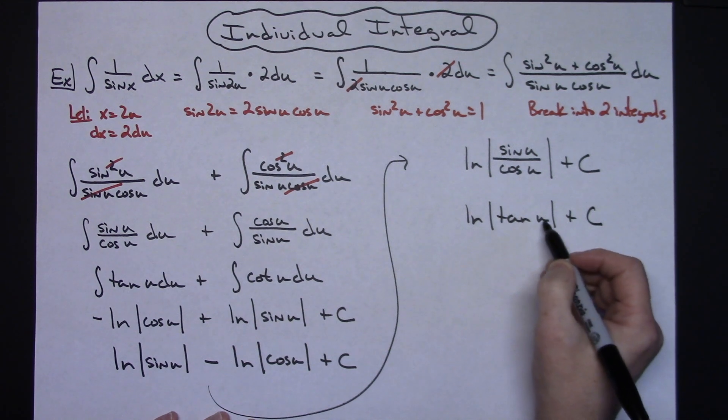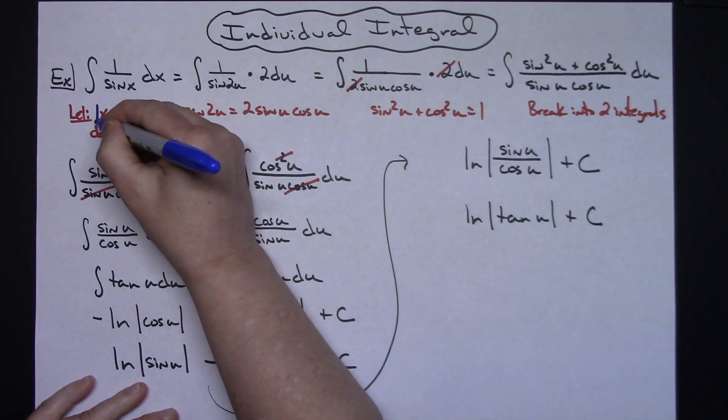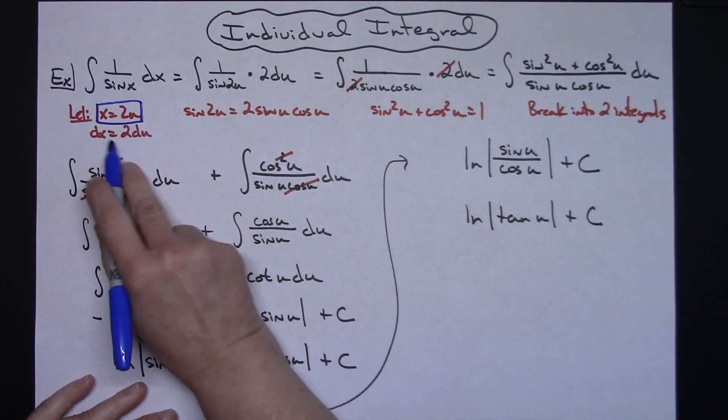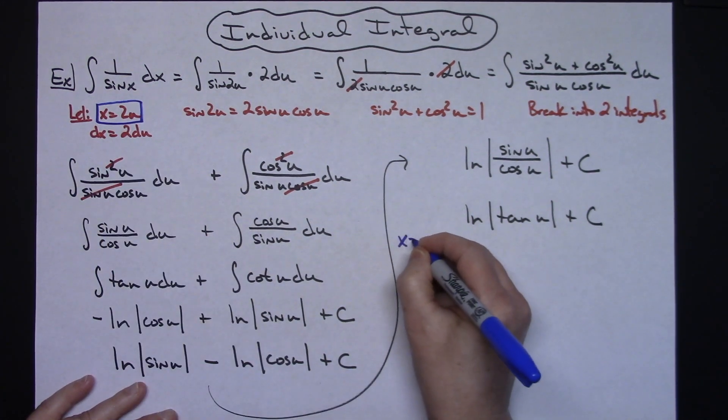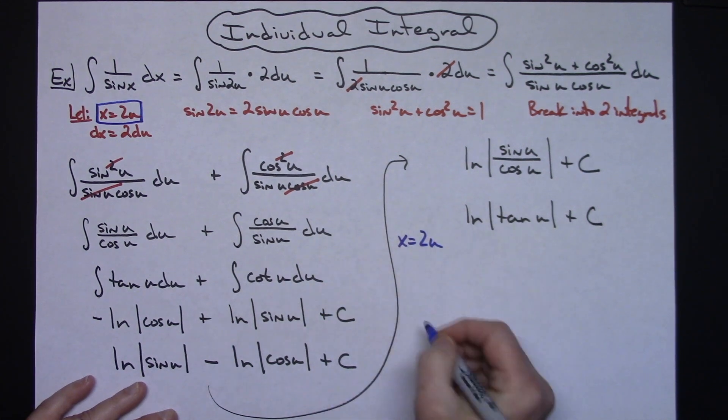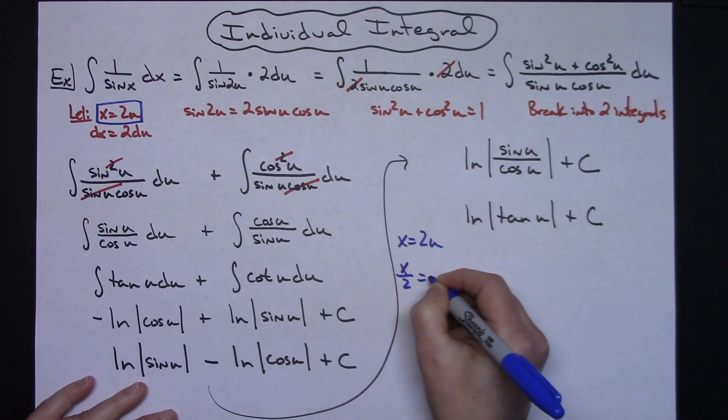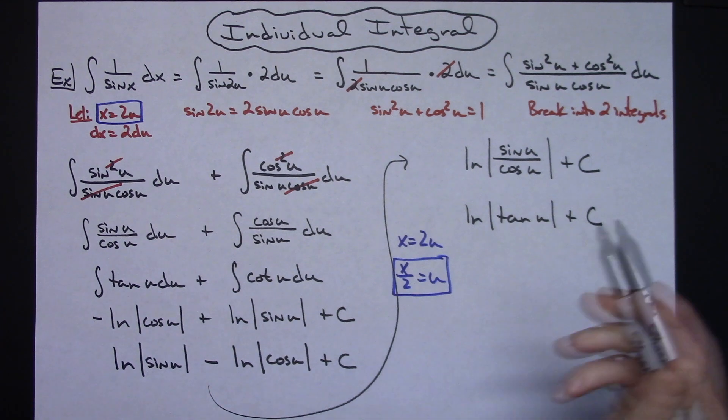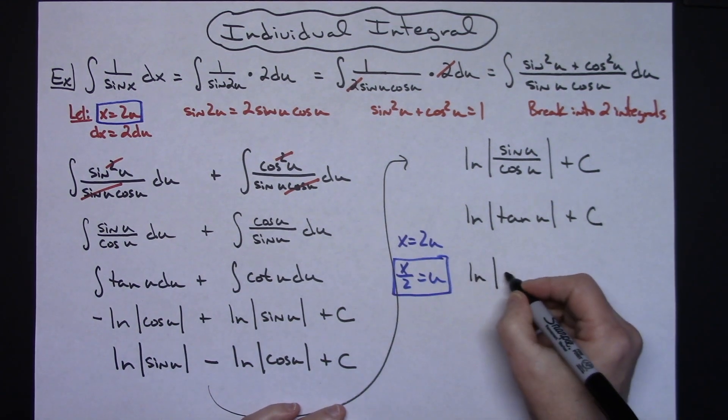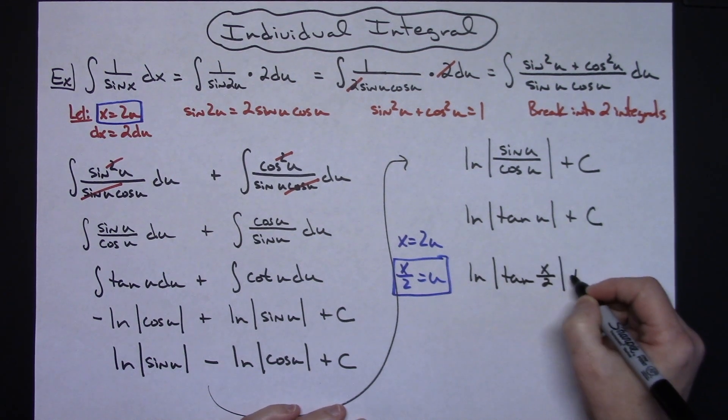Now I've got to come up with a value for my u. So what I'm going to do is I'm going to come back over here and I'm going to look with what I started. I started with letting x equal 2u. So if I let x equal 2u initially, I can solve for u, divide both sides by 2. So x over 2 is going to be equal to u. So now I have a value for u. I can put it back in. I'll have the natural log absolute value tangent x over 2 and then plus c.